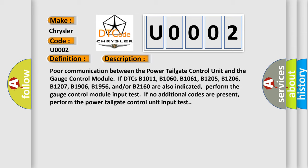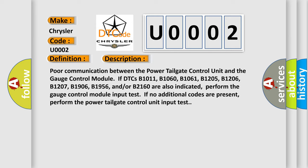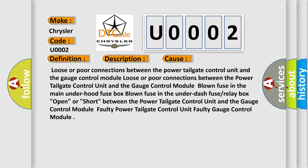This diagnostic error occurs most often in these cases: loose or poor connections between the power tailgate control unit and the gauge control module; a blown fuse in the main under-hood fuse box; a blown fuse in the under-dash fuse or relay box; an open or short circuit between the power tailgate control unit and the gauge control module; a faulty power tailgate control unit; or a faulty gauge control module.